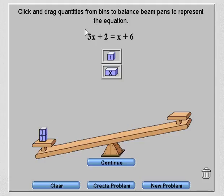And then I'm also going to add 3x's on the left-hand side. And I just click and drag them. So now I've got 3x plus 2 on the left.